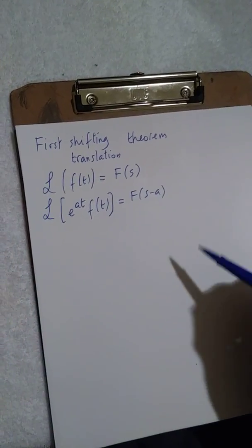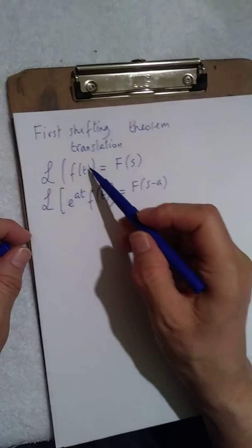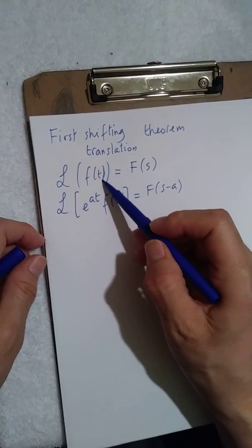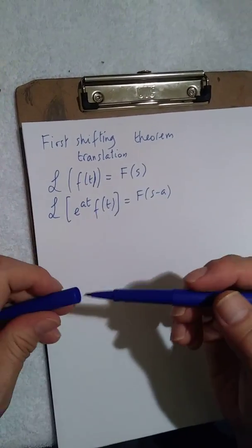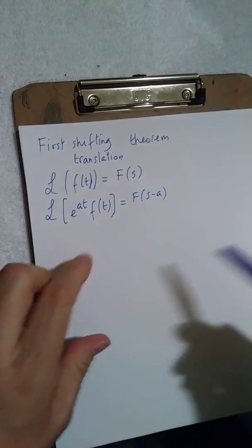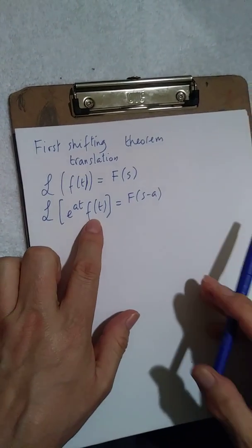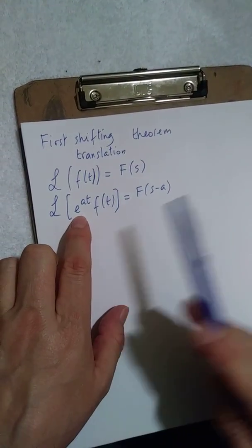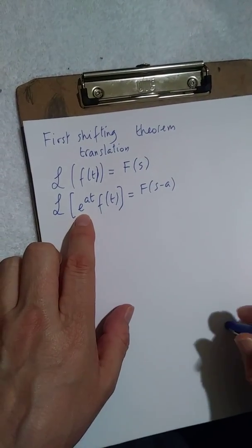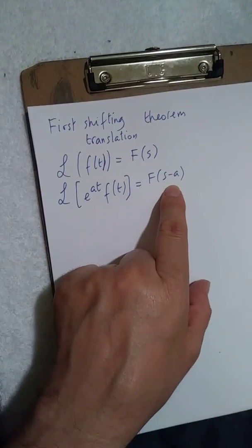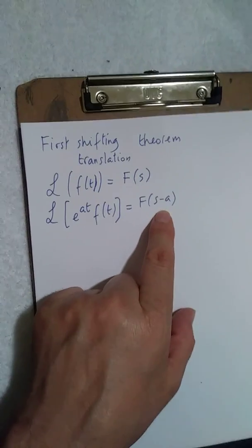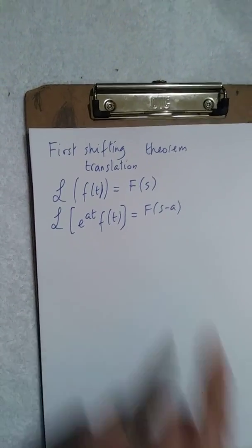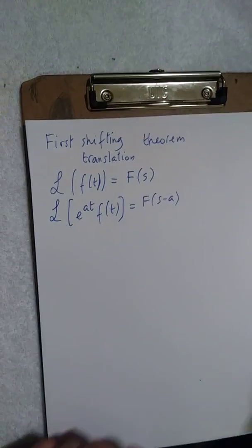What this means is: first you transform f(t), and when you multiply f(t) by e^(at), all you're doing is shifting s down by an amount a. That's all you're doing.